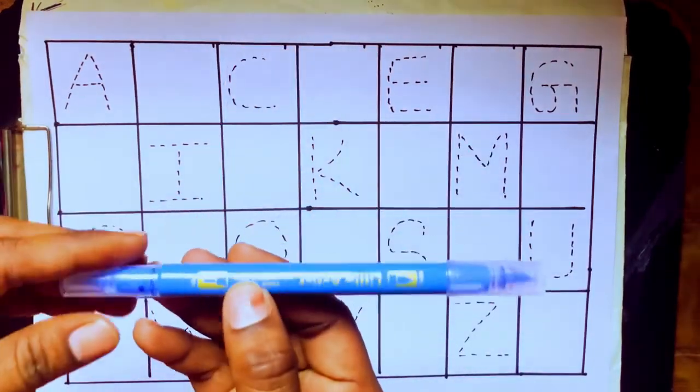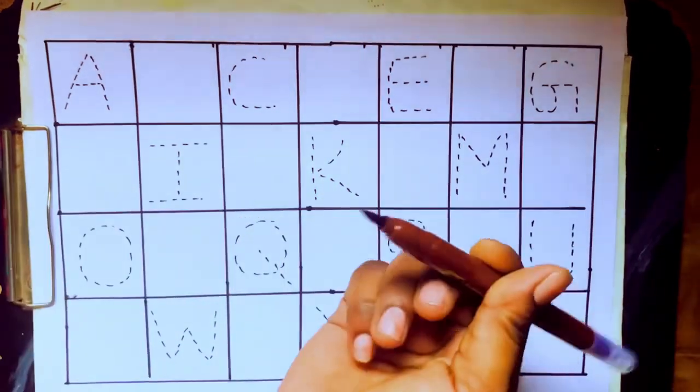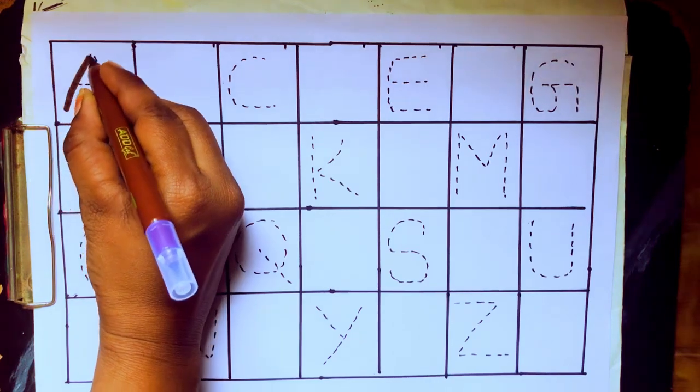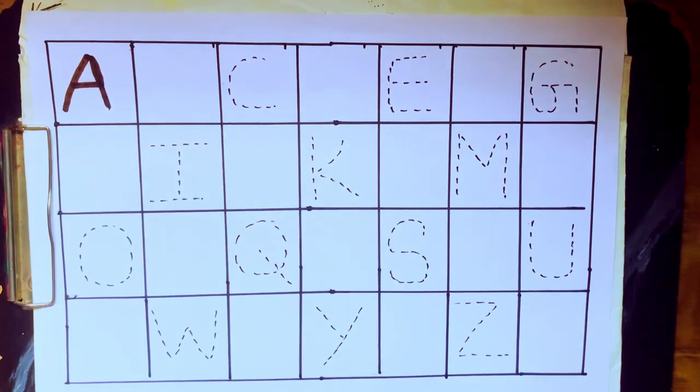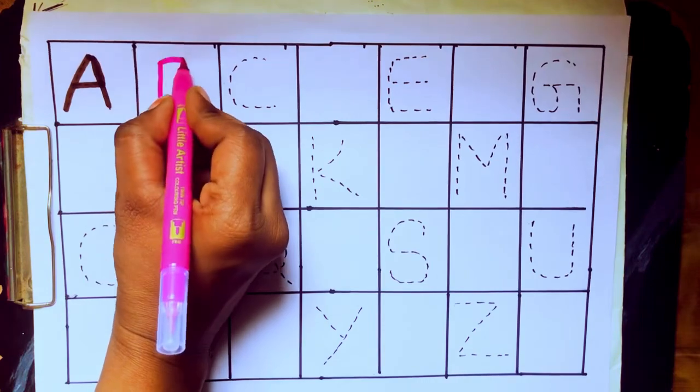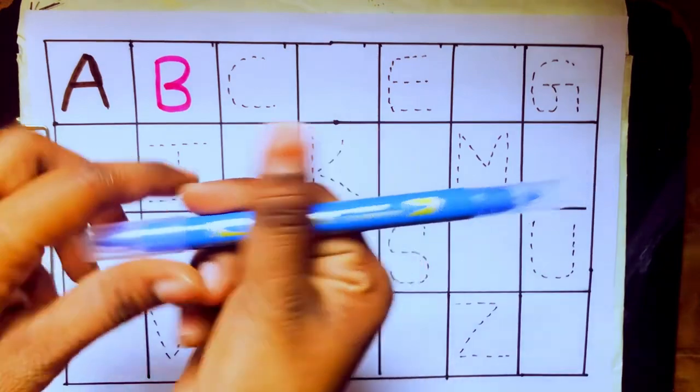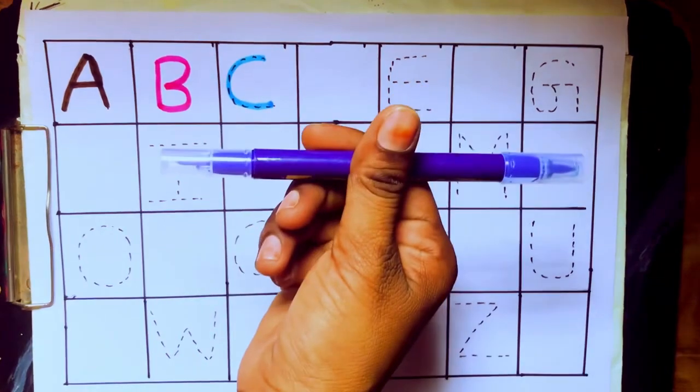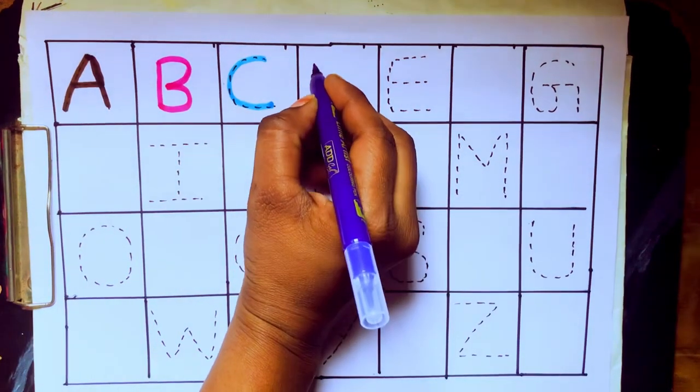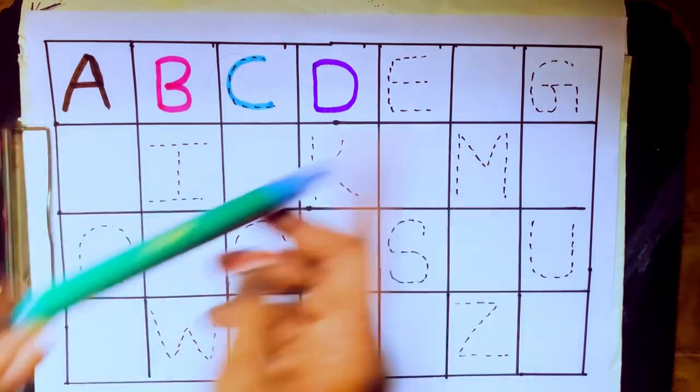Okay, let's draw alphabets. Brown color: A, A for Apple. Pink color: B, B for Ball. Sky blue color: C, C for Cat. Violet color: D, D for Dog.